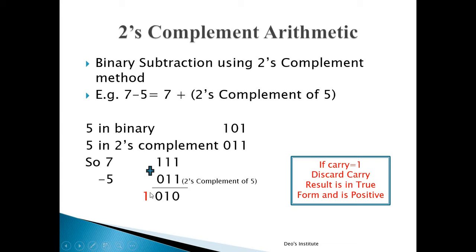Carry is 1. When performing 2's complement arithmetic, remember this rule: if carry is 1, discard the carry — the result is in true form and is positive. Here carry is 1, so we discard it. The remaining bits are 010, which equals 2. The result is positive and in true form, so no further conversion is needed. The final answer is +2.